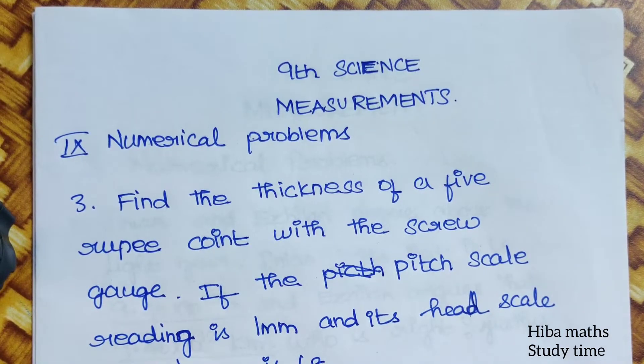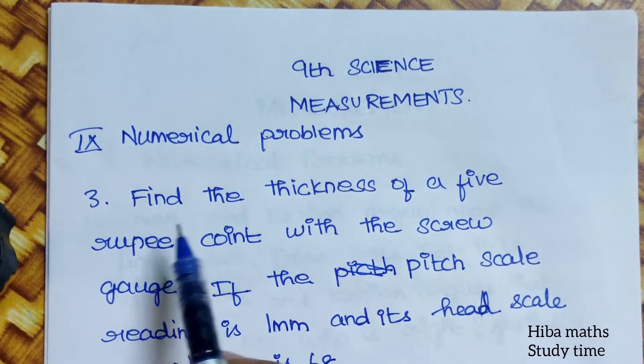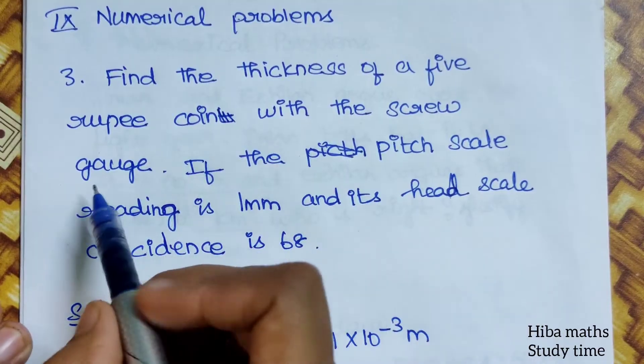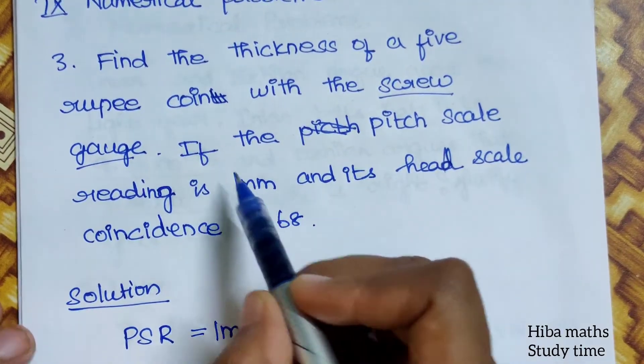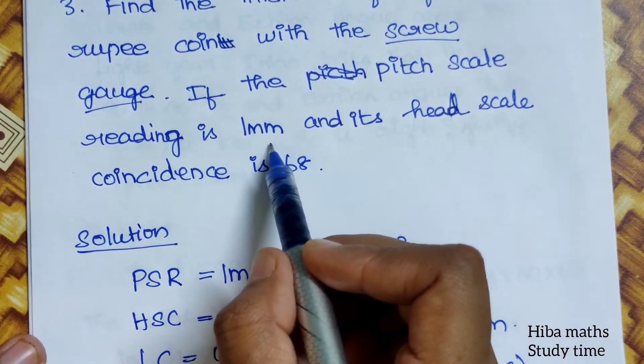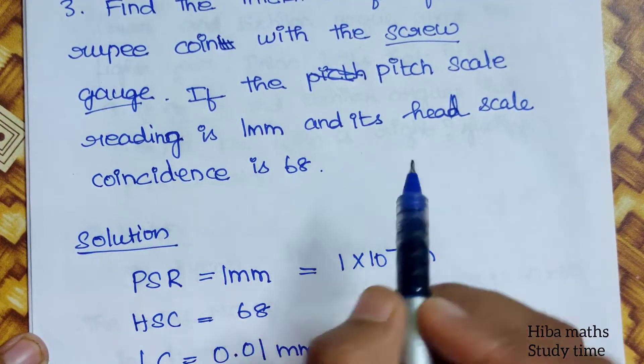Hello students, welcome to Hibamax study time. 9th standard science measurements numerical problems. Third question: find the thickness of a 5 rupee coin with a screw gauge. If the pitch scale reading is 1 mm and its head scale coincidence is 68.